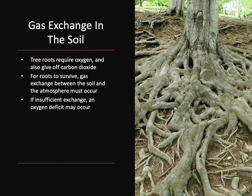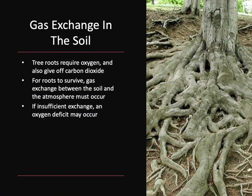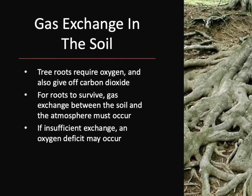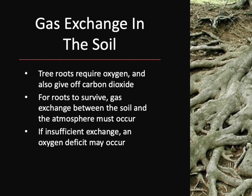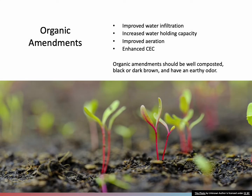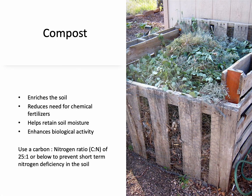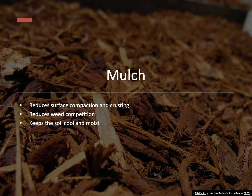Gas exchange in the soil is super important. Trees require oxygen and give off carbon dioxide, so gas exchange between the soil and the atmosphere must occur. If there is insufficient exchange, an oxygen deficit may occur. Organic amendments improve soil structure, water retention, and nutrient availability. A good compost with the proper carbon-to-nitrogen ratio can enrich the soil and reduce the need for chemical fertilizers. Mulching reduces surface compaction, conserves moisture, and keeps soil temperatures steady.